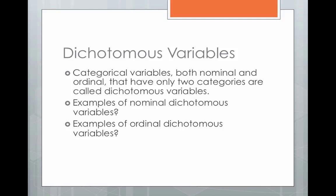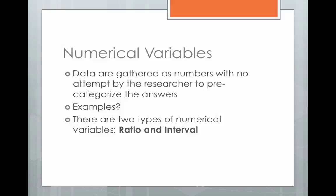Ordinal dichotomous variables are fewer than nominal ones, but they still exist — where you have two categories and one comes before the other, so there's some sort of rank to the categories. For example, under 18 or over 18 would be a good example of an ordinal dichotomous variable.